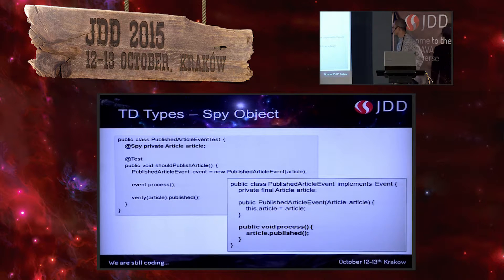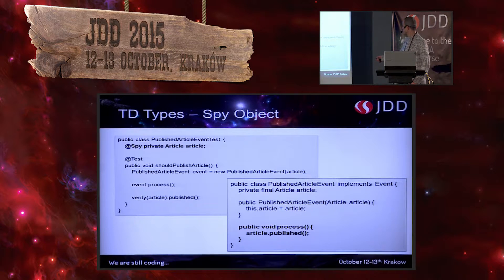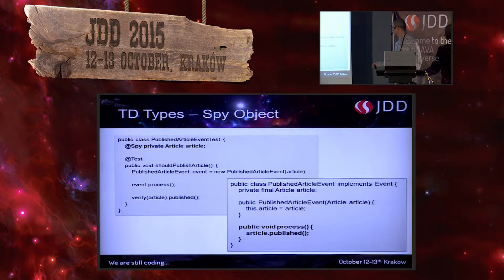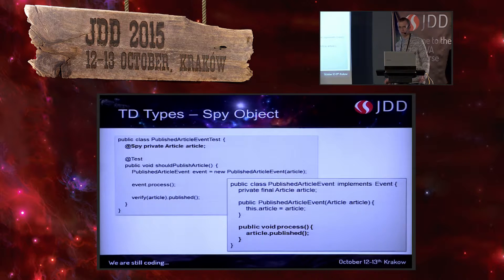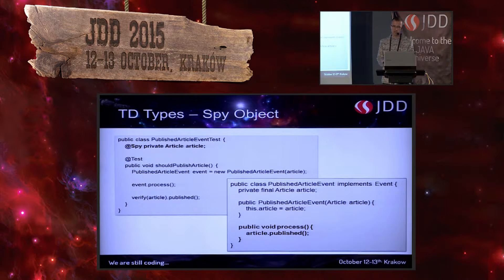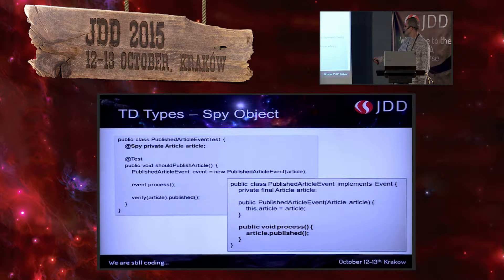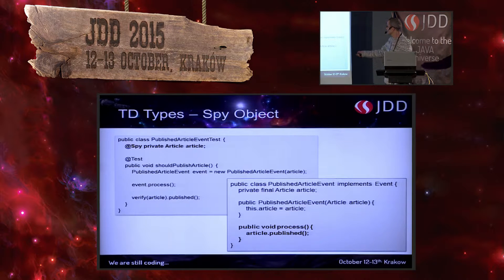Next is the spy object. As the name says, it's all about spying. In the example we have a publish article publisher — it changes the state of the article to published. What we want to spy on is that the method 'published' was invoked. We don't care what happens later, we don't care about input or output — we care that this method was invoked when we execute the process method of our class. We can use the @Spy annotation from JUnit/Mockito. And we are checking: verify that article was published.